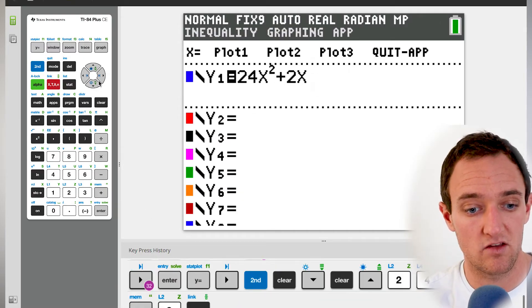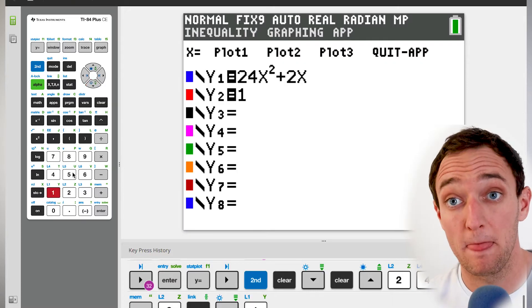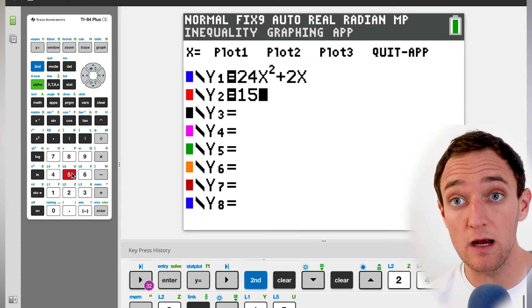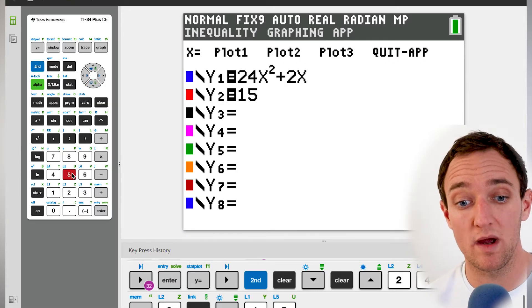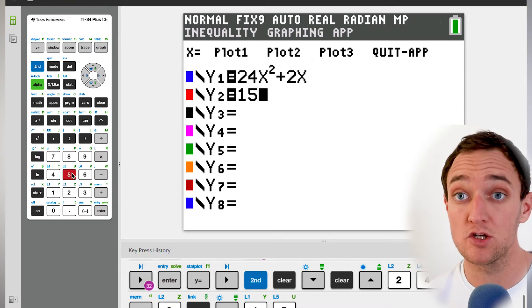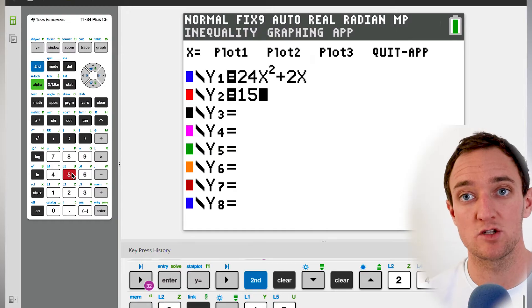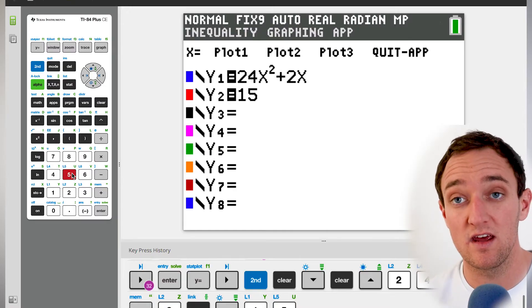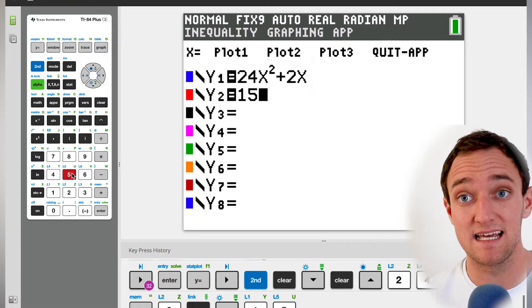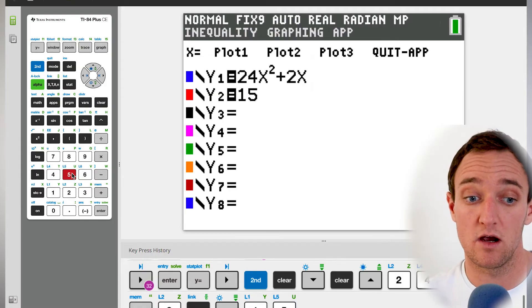And then when we solve for that, those Ys cancel out and we are essentially solving our systems of equations. So let's give that a try here. We're going to say 24X squared, and that's going to be plus 2X. Very cool. And it's going to be 15 down here. And again, these are both going to equal Y. And we're saying, give me a situation in which Y1 equals Y2. That's what this solve is doing. Find those situations where they equal each other. So this is essentially giving us precisely the solution that we want here.